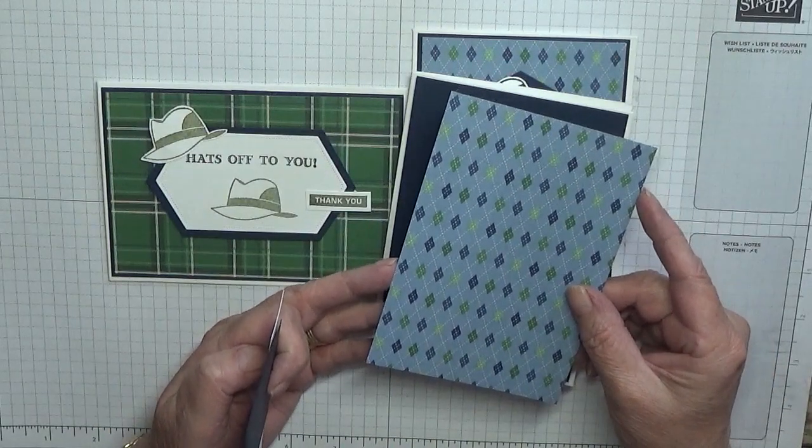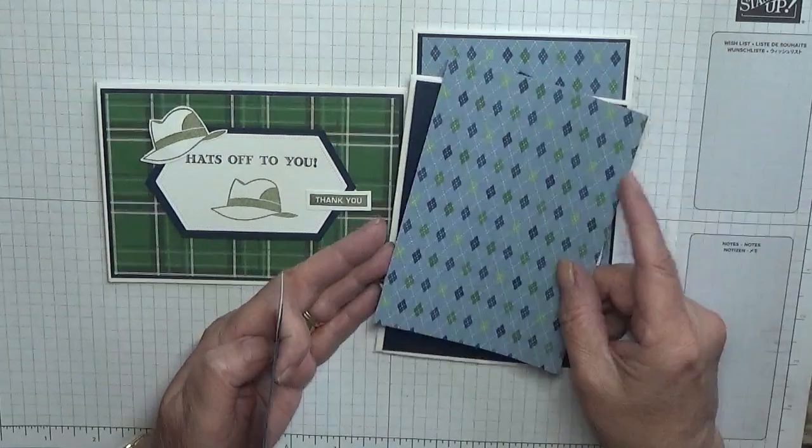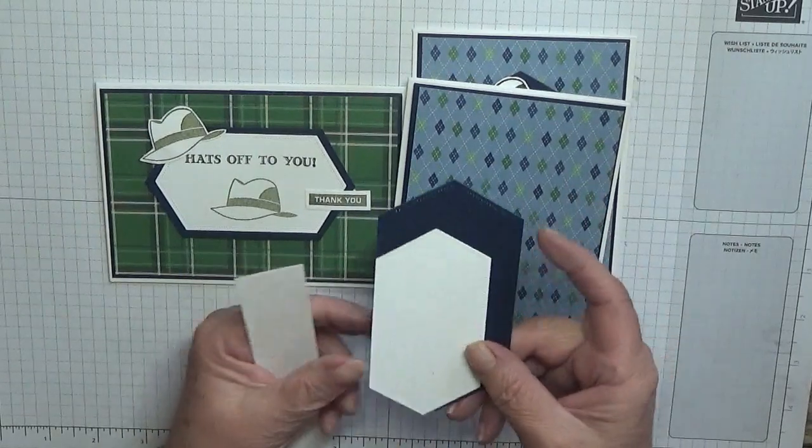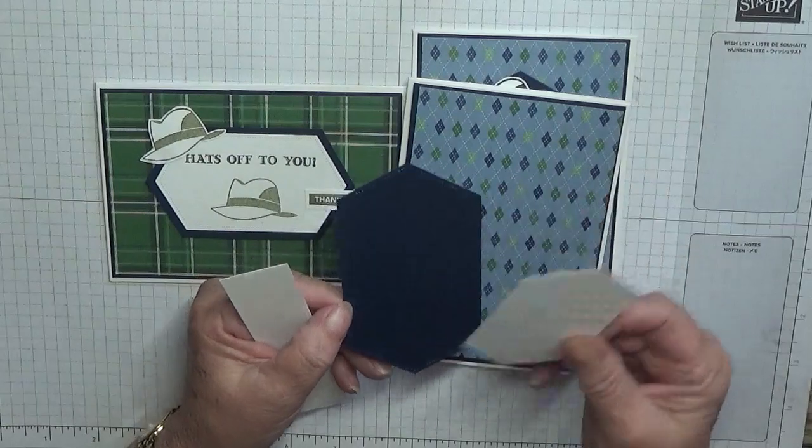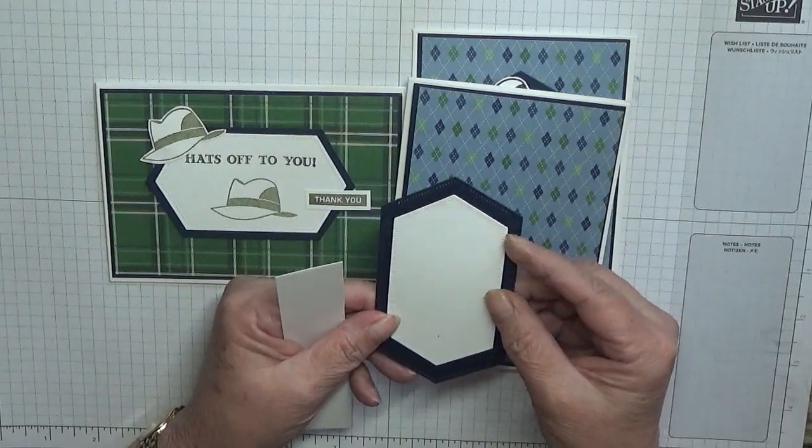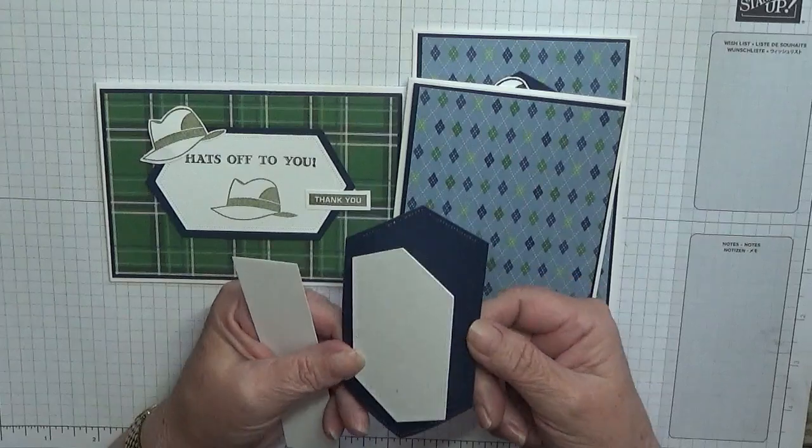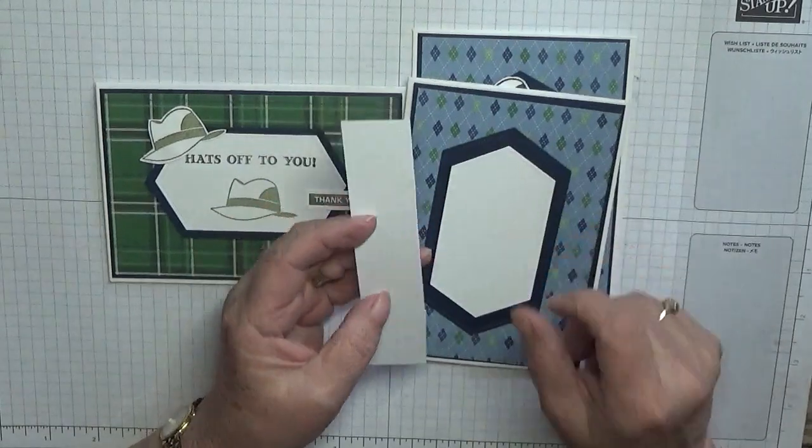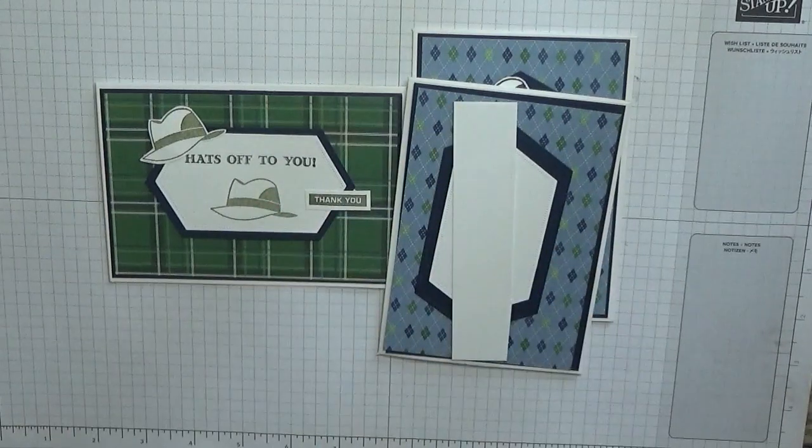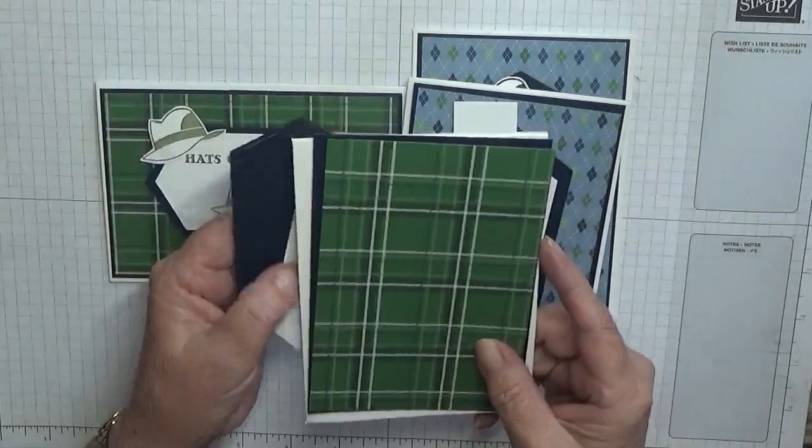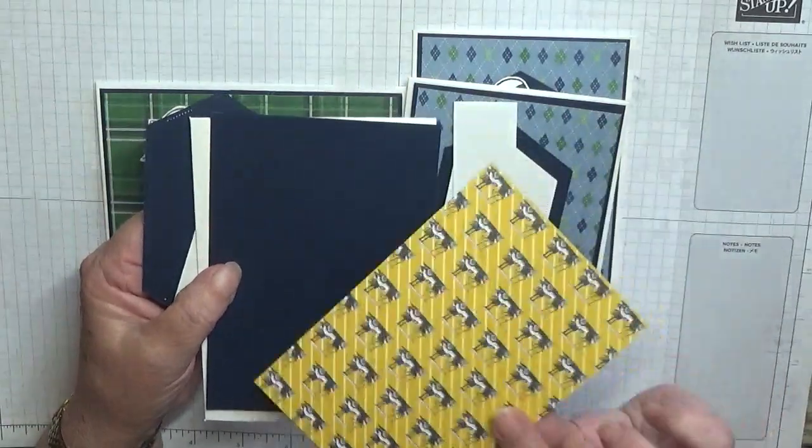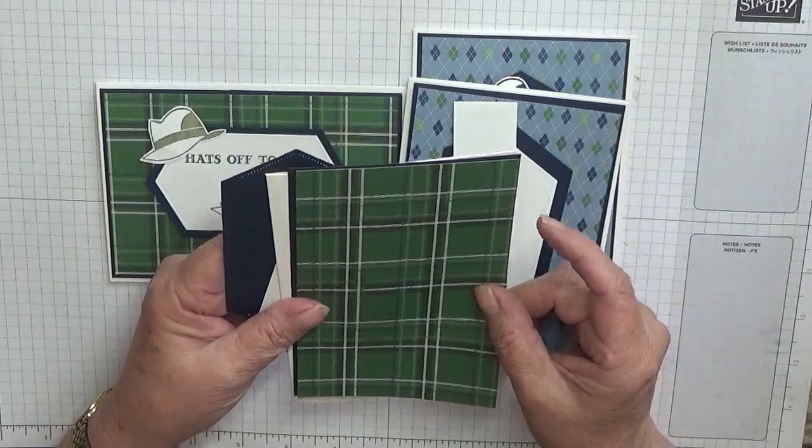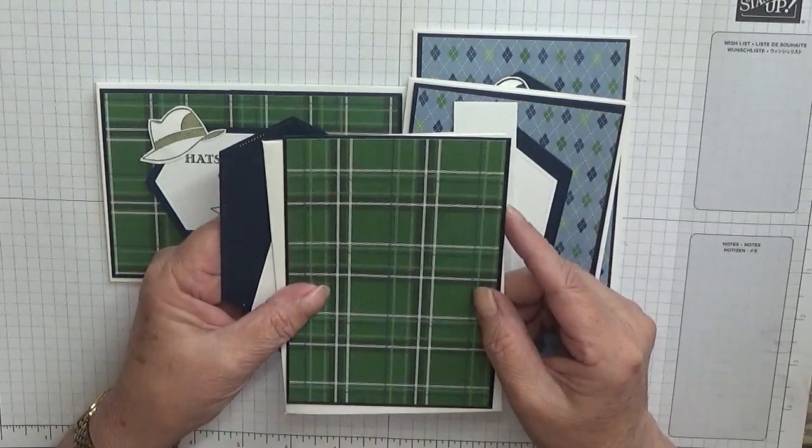From the nesting dies I have cut out two dies that layer on each other, one in Night of Navy and one in white. I have a scrap of white for the sentiment. The other card is exactly the same setup with a change of DSP, still from the Clubhouse but I'm using the Garden Green check.